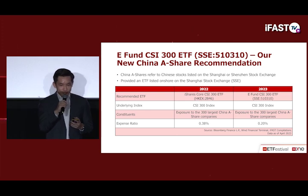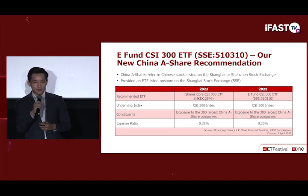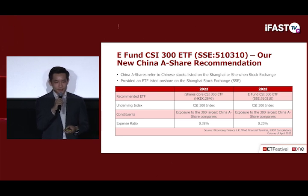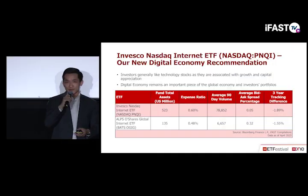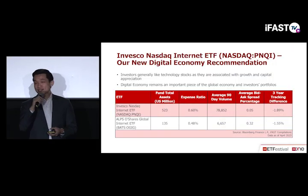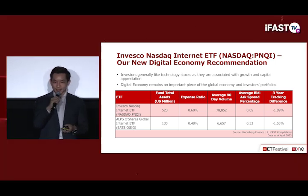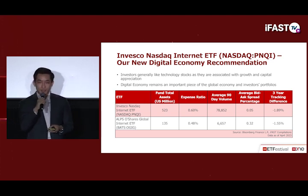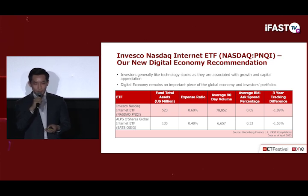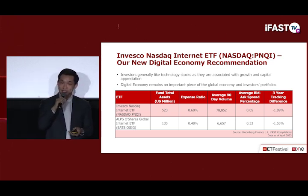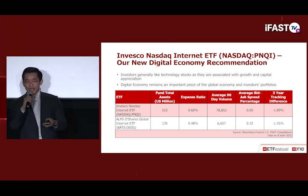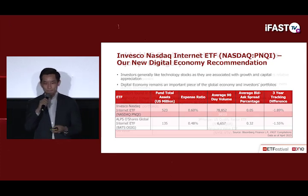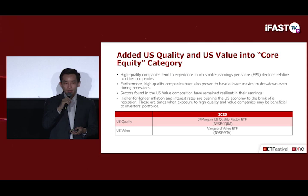We recommend the Invesco Nasdaq Internet ETF (ticker: PNQI), which allocates the majority to big tech companies. Last year our recommended ETF was the ALPS O'Shares Global Internet ETF. We made this change because the Invesco Nasdaq Internet ETF has a larger allocation to big tech companies, which we believe will better weather near-term and longer-term headwinds. Although the Invesco Nasdaq Internet ETF has a higher expense ratio of 0.6%, it compensates with larger liquidity and AUM.